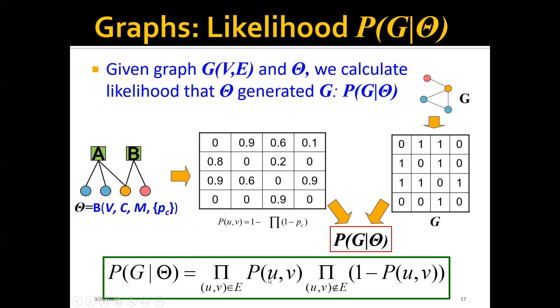So again, this is just a product of all of the terms. And for each pair of nodes with an edge, we have a P(u,v). And for each pair of nodes without an edge, we have a term that is 1 minus P(u,v).